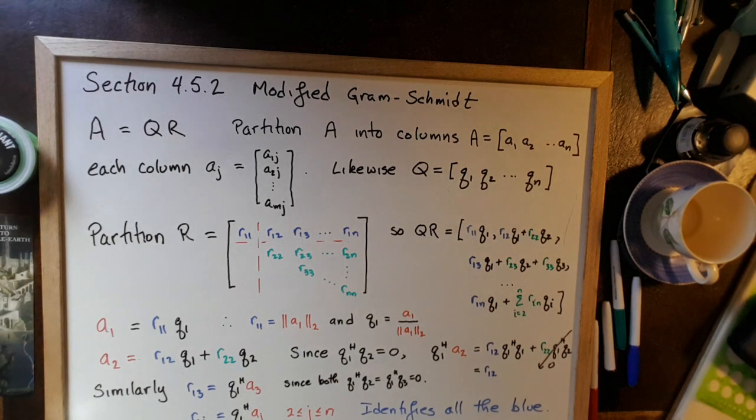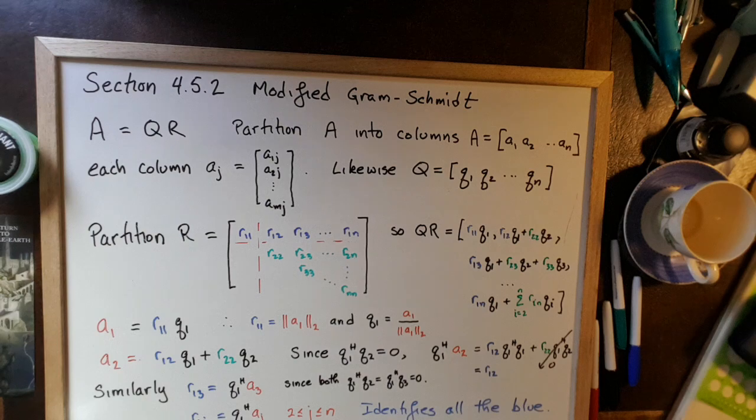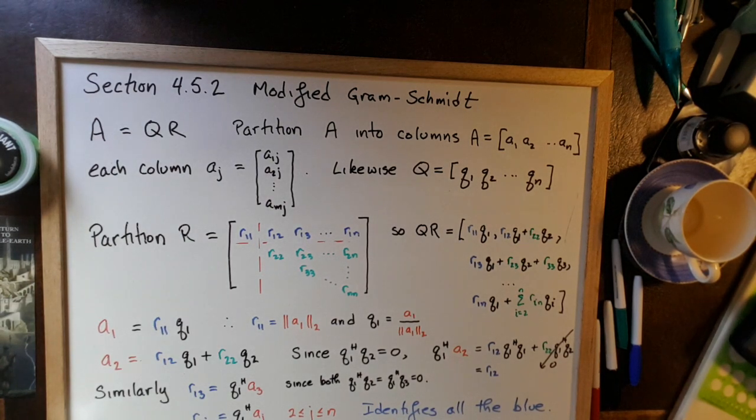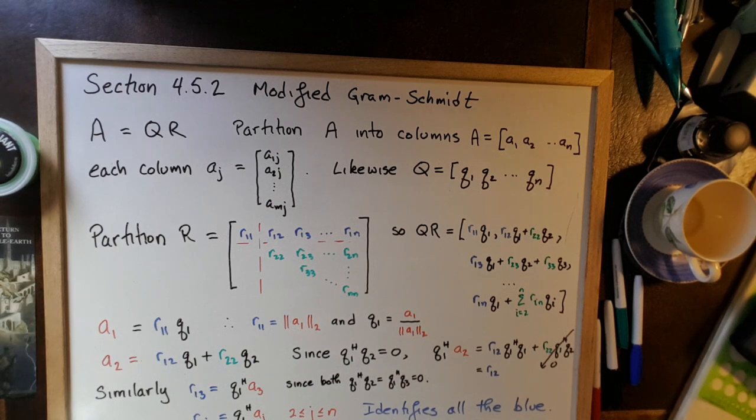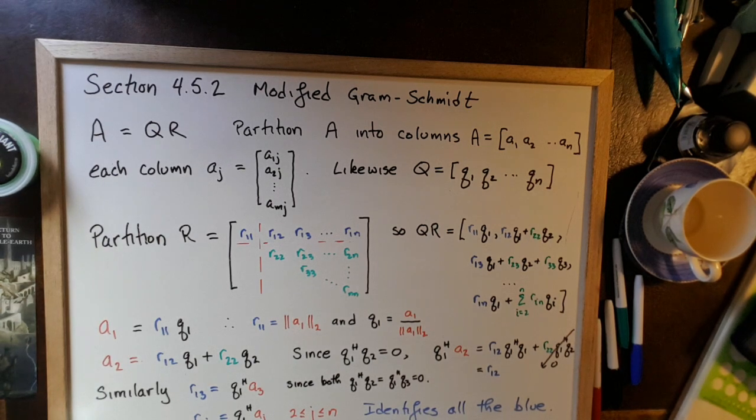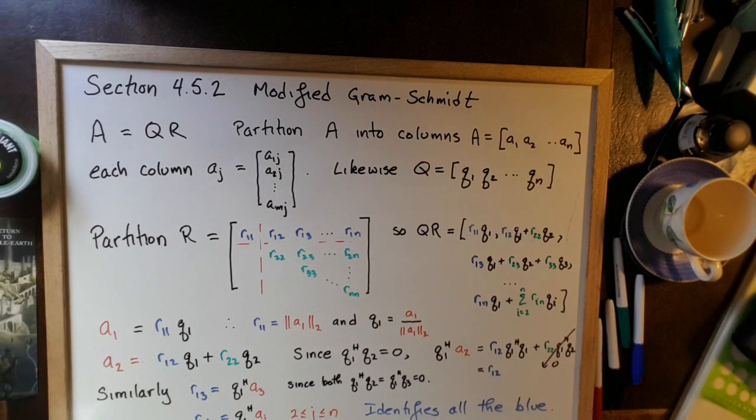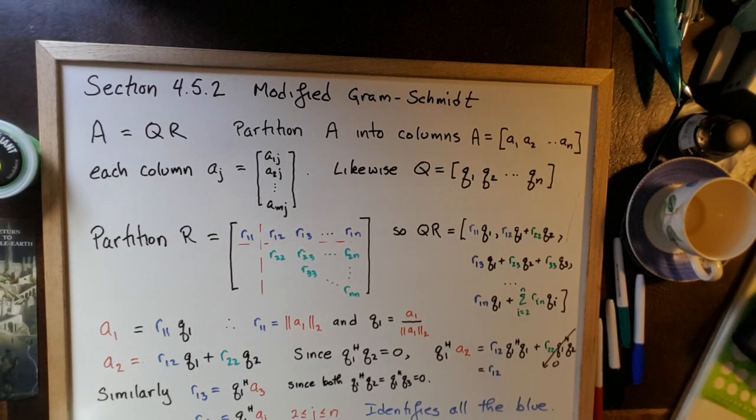So we've talked about how to use a QR factoring to solve a linear system of equations AX equals B. You write that as a sequence of two linear systems that you can solve. But how do you compute QR factoring?